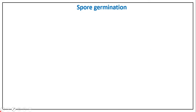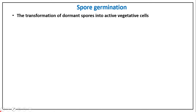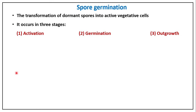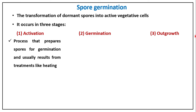Spore germination transforms dormant spores into active vegetative cells and occurs in three stages: activation, germination, and outgrowth. Activation often involves a heat treatment — for example, 80°C for 10 minutes — which kills vegetative cells and simultaneously activates spores, preparing them for germination.